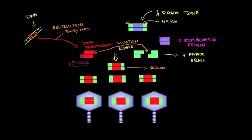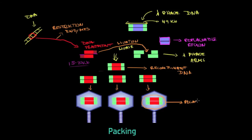The result is a recombinant DNA molecule — a DNA molecule comprised of pieces from different organisms. This recombinant molecule will replicate inside a host, producing copies of the recombinant DNA. These recombinant DNA molecules then undergo packing into the lambda phage protein coat (capsids), resulting in lambda phage particles containing the recombinant DNA with the original DNA fragment inside.